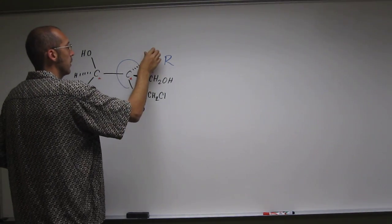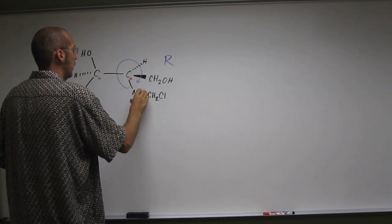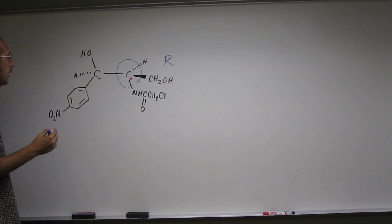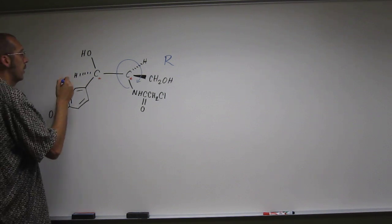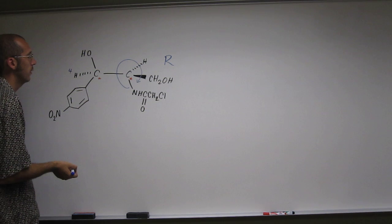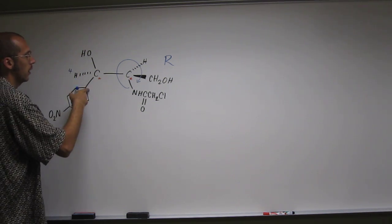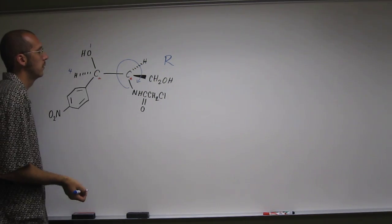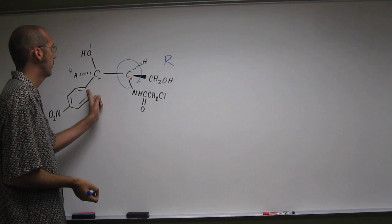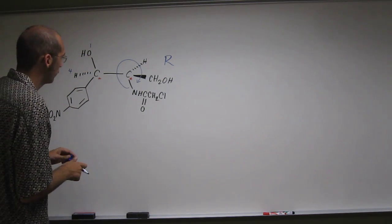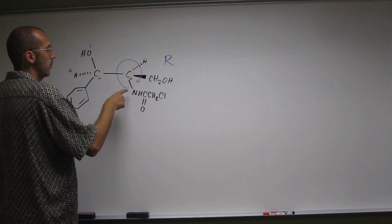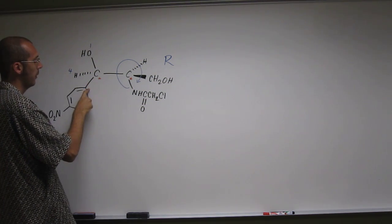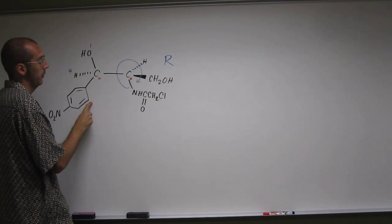So let's erase those little numbers so we don't confuse ourselves while we're doing this other stereocenter over here. We want to prioritize just like we did before. So hydrogen, always number four if it's there. Oxygen's bigger than carbon and carbon, so oxygen's going to be number one. So this carbon and this carbon, we have to decide which one's bigger. Well this carbon's bonded to a nitrogen. And this carbon is bonded to a carbon, a carbon, and a carbon.